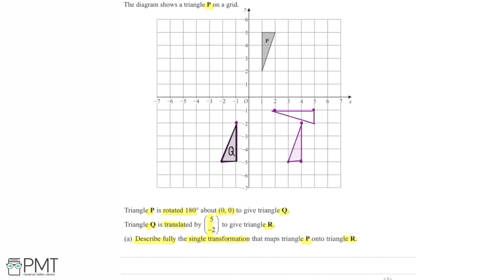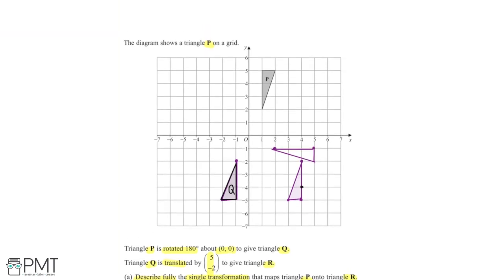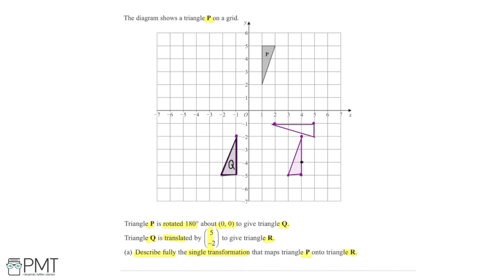For the second part of the translation, we shift minus two — two down in the y-direction. I look at one point and shift it two down, then draw in the same triangle again: three down, one across to the left, with the hypotenuse up here. And that is triangle R.